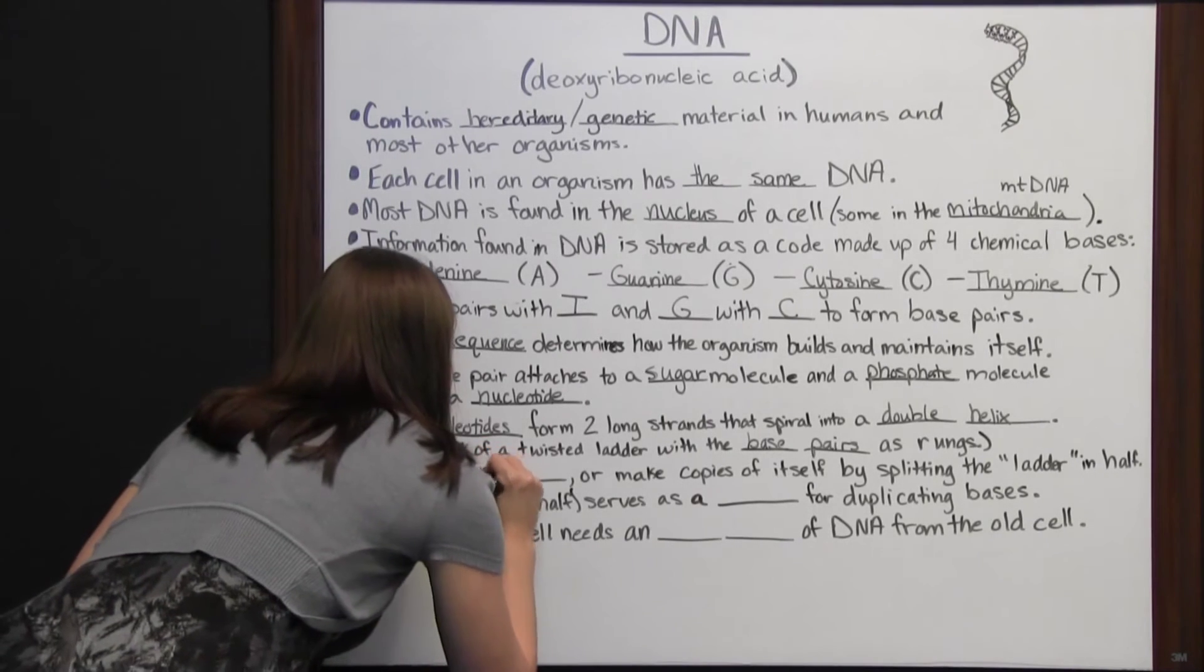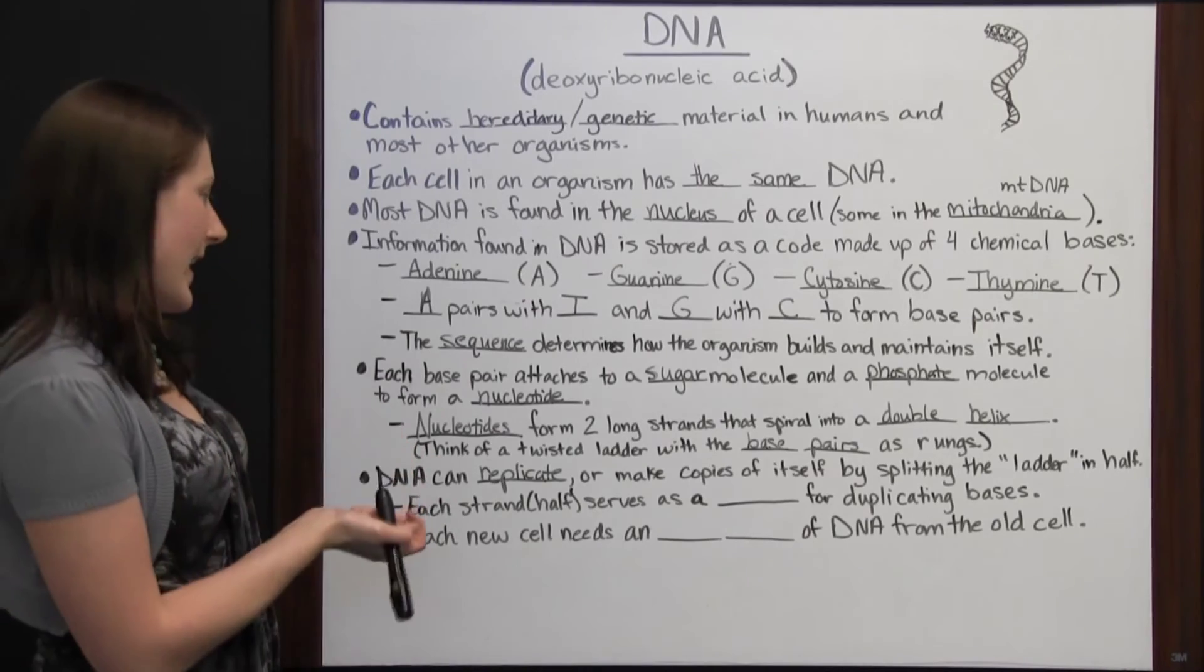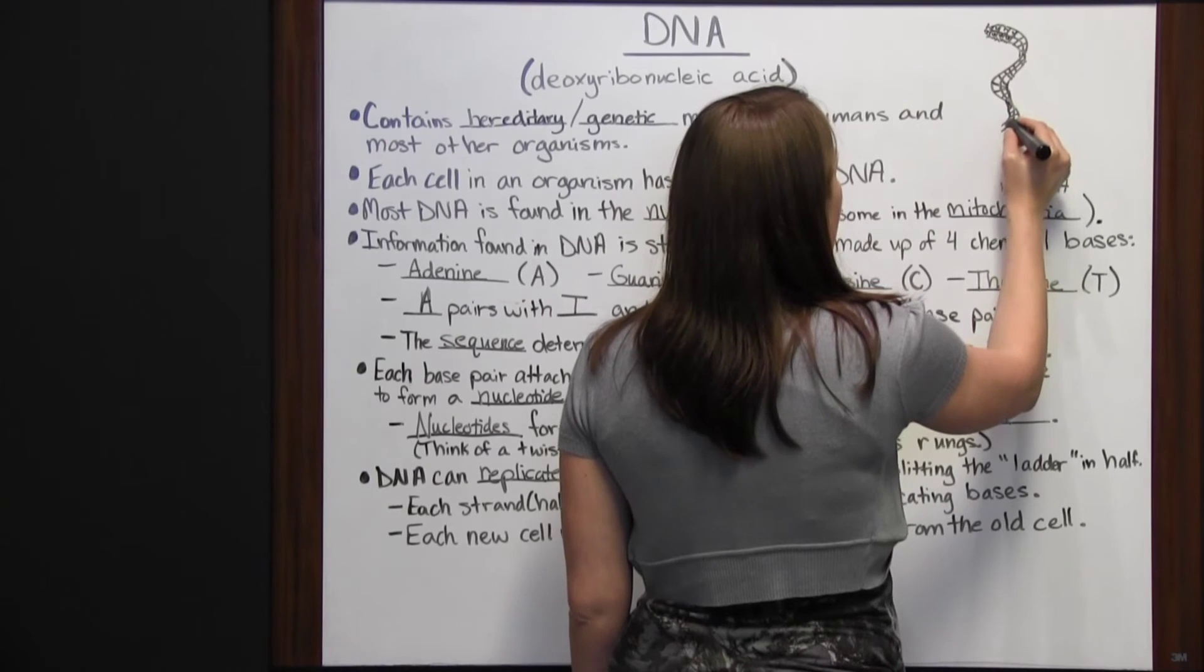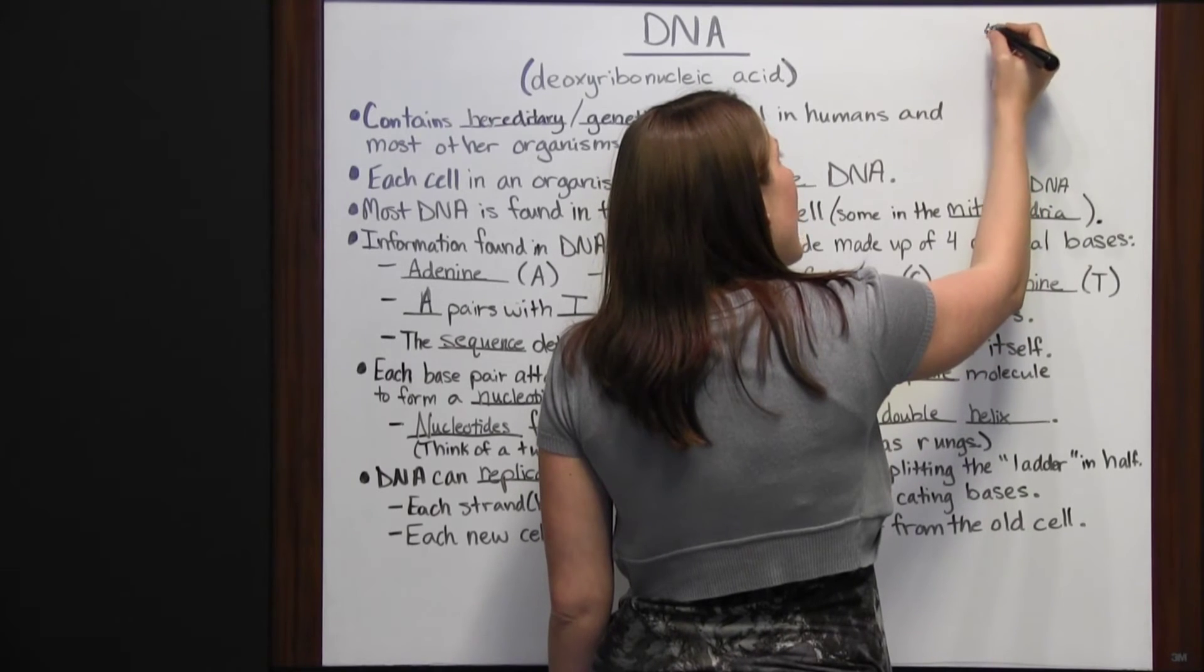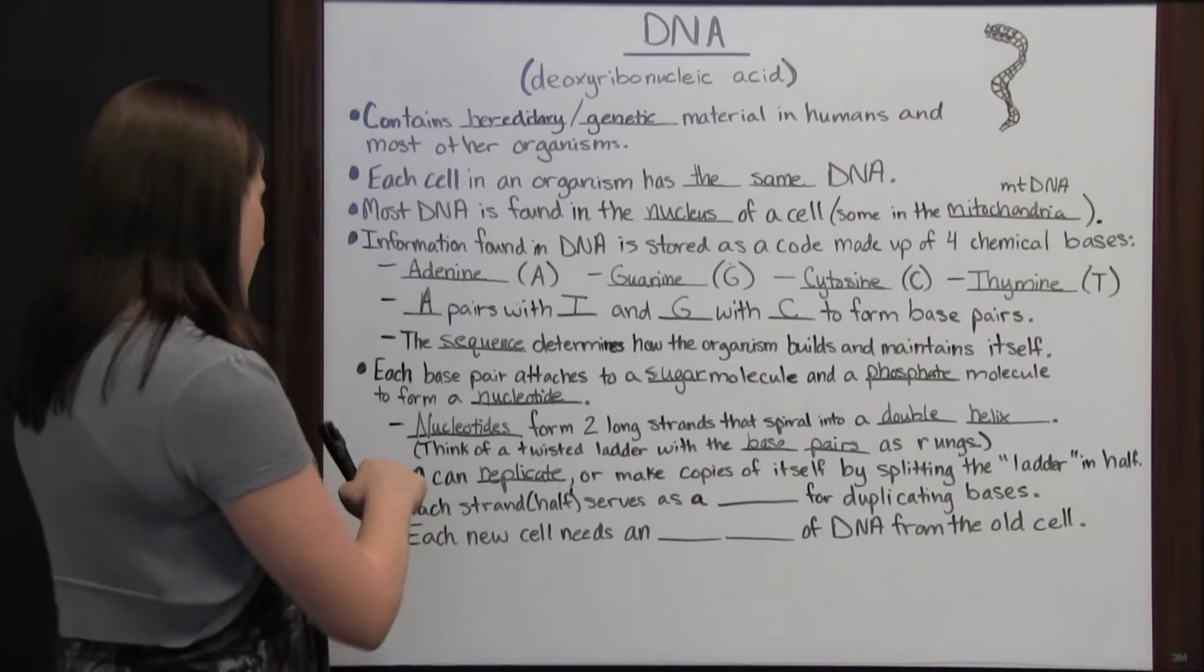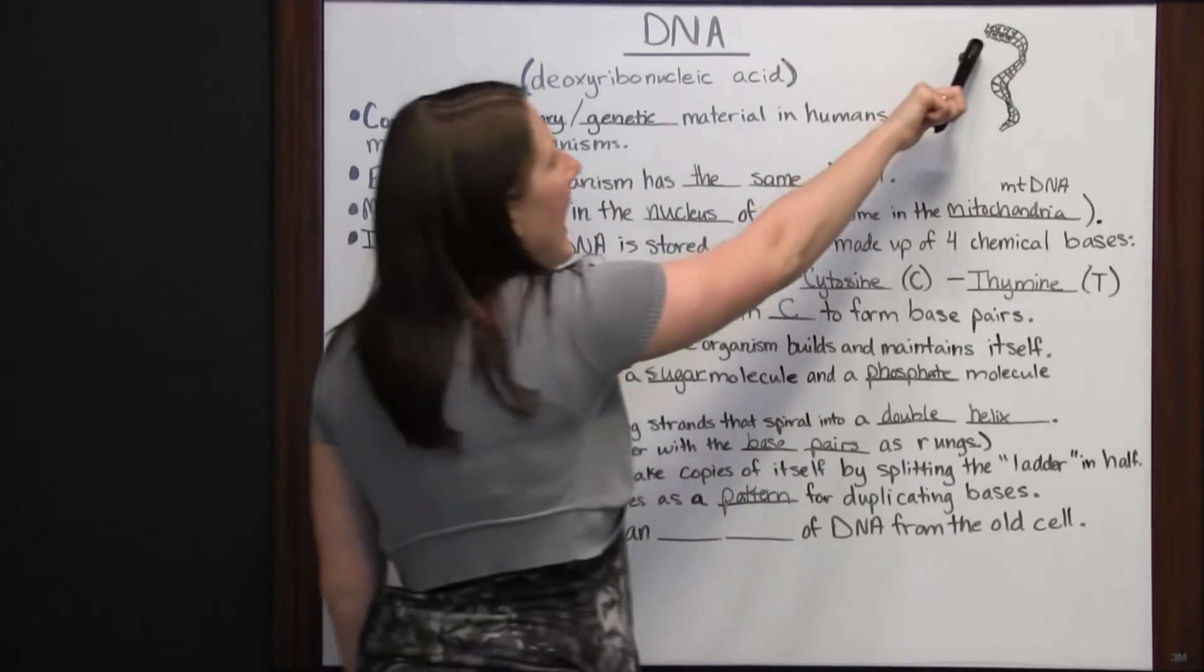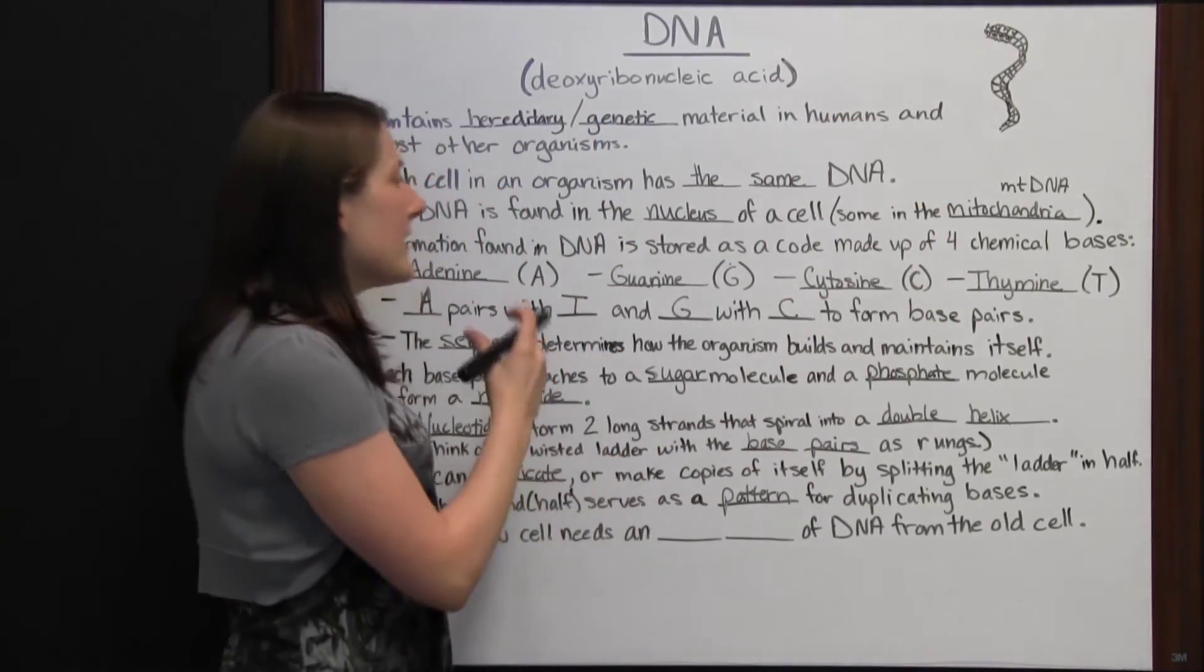DNA can replicate or make copies of itself by splitting the ladder in half. If we're looking at this, and we just decided to go through and cut this ladder in half, we would be separating those base pairs all the way down. Then you have A, G, A, G, and any other base pairs you've got. We know we've got adenine and guanine, adenine and guanine, and because we know what's on one side of the ladder, each strand or half of that ladder serves as a pattern for duplicating bases. Since we know we've got adenine here, we know the thing that has to pair with it is thymine. If we've got guanine, cytosine has to pair with it.